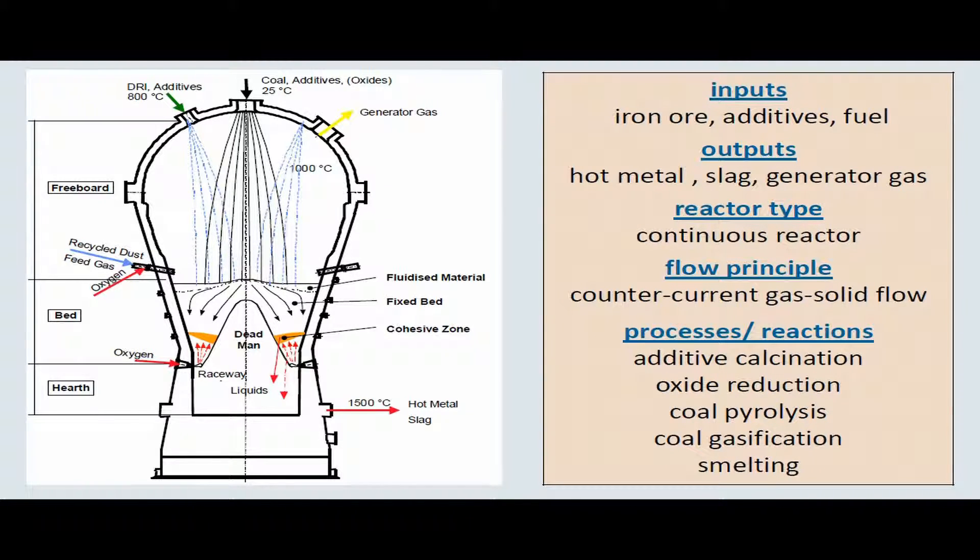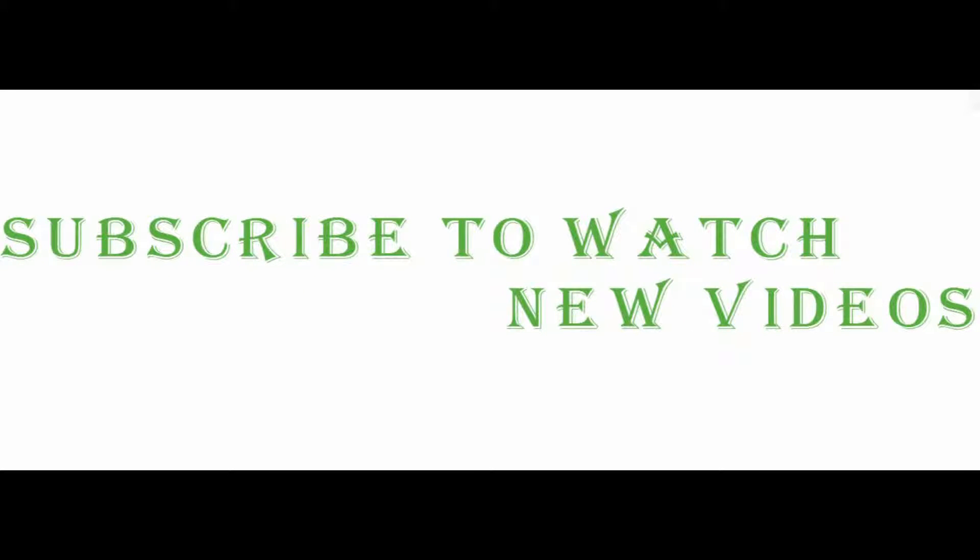The hot metal contains from 4 to 4.5% of carbon, from 0.02 to 0.09% of sulfur, and from 0.03 to 0.8% of silicon.